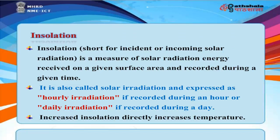Insolation — short for Incident or Incoming Solar Radiation — is a measure of solar radiation energy received on a given surface area recorded during a given time. It is also called solar irradiation and expressed as hourly or daily irradiation depending on the recording period. Increased insolation directly increases temperature.